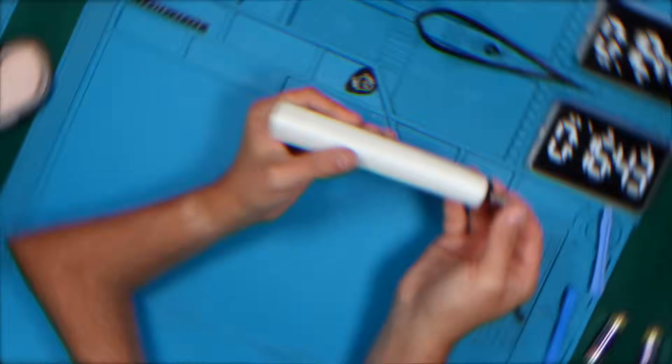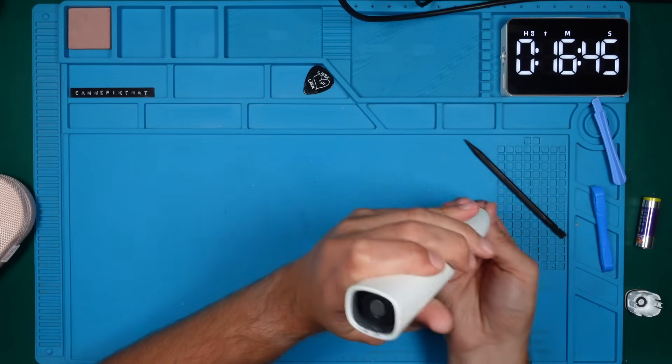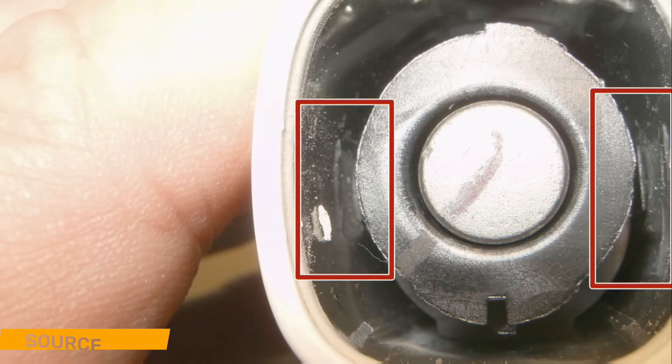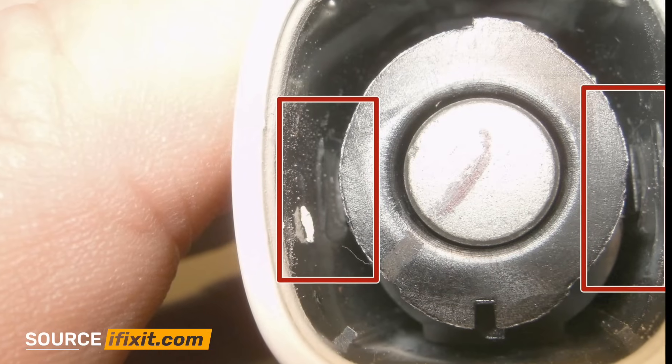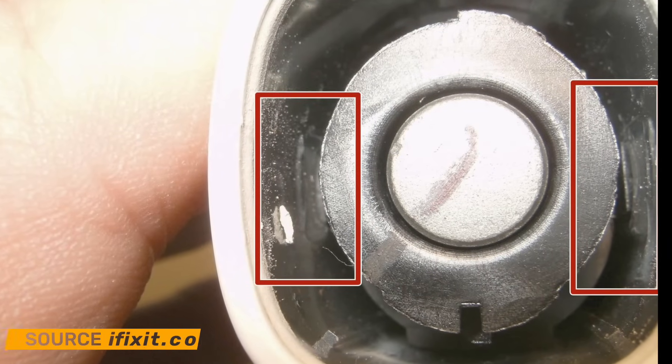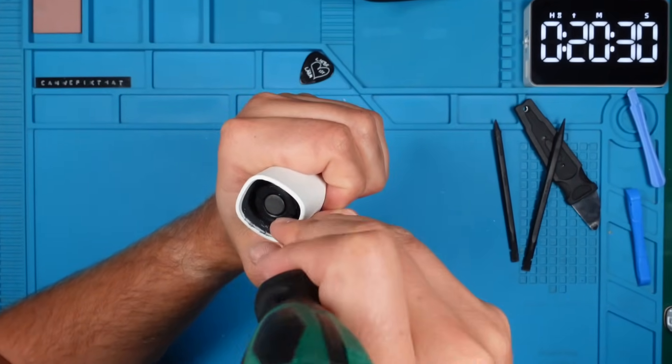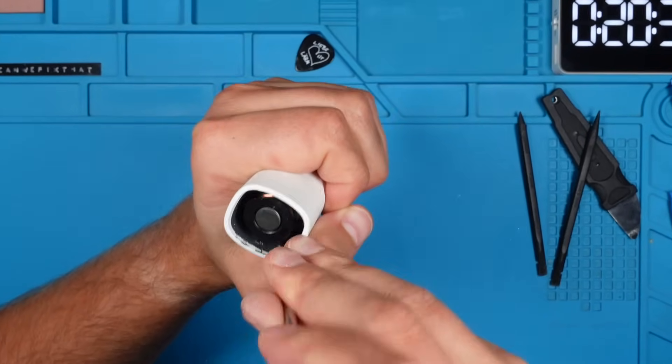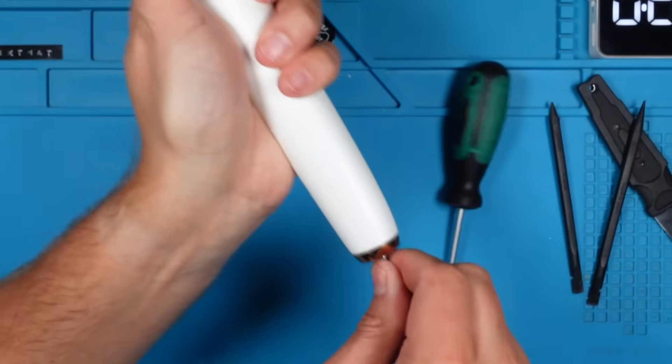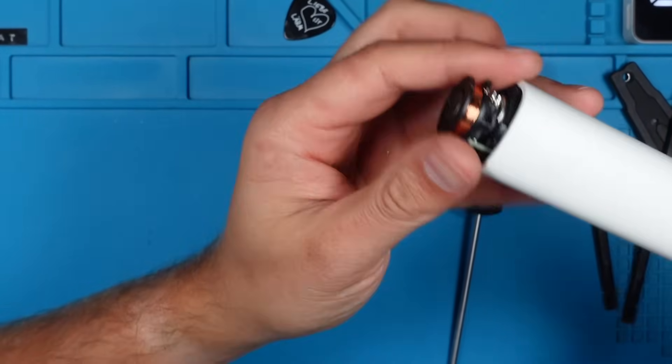Nice. To lift the guts out of the case, we need to take the flathead screwdriver and loosen the clip from the inside. It is a bit tricky, but it's absolutely doable. Here we go.